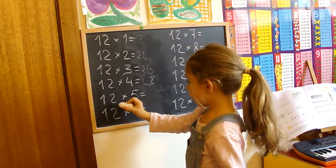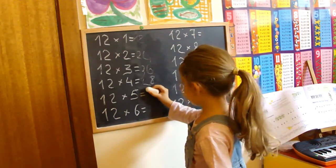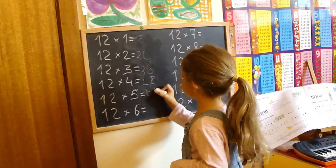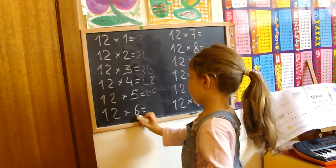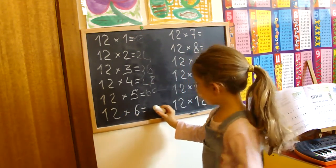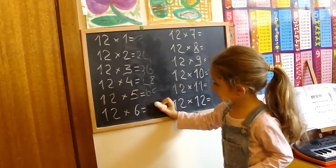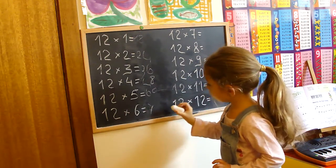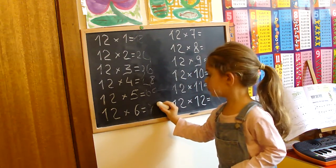Twelve times five, sixty. Twelve times six, seventy-two.